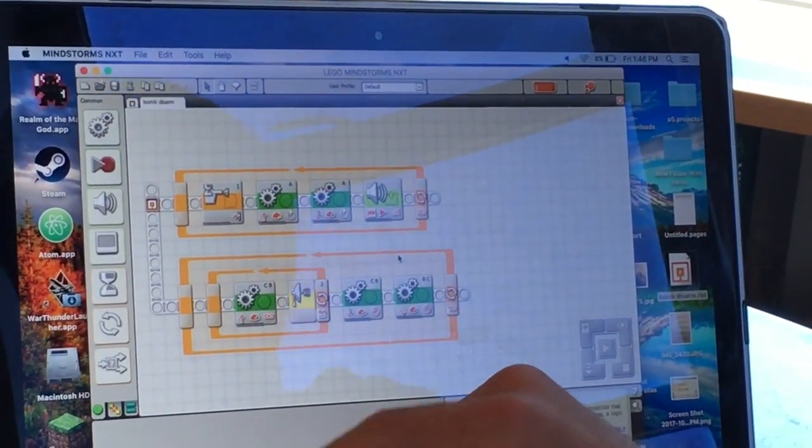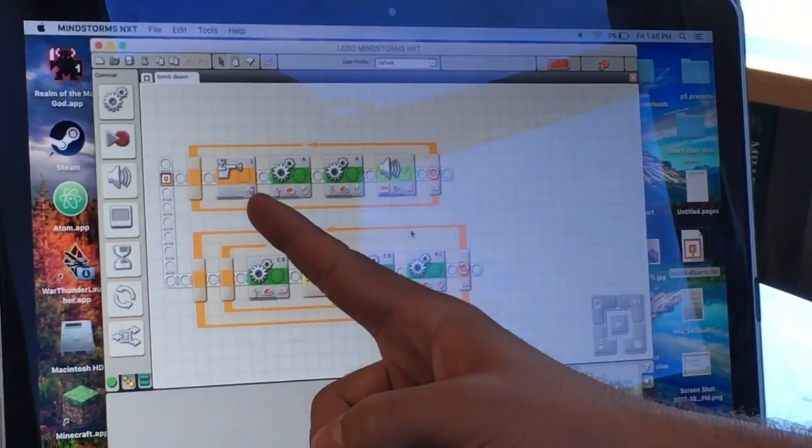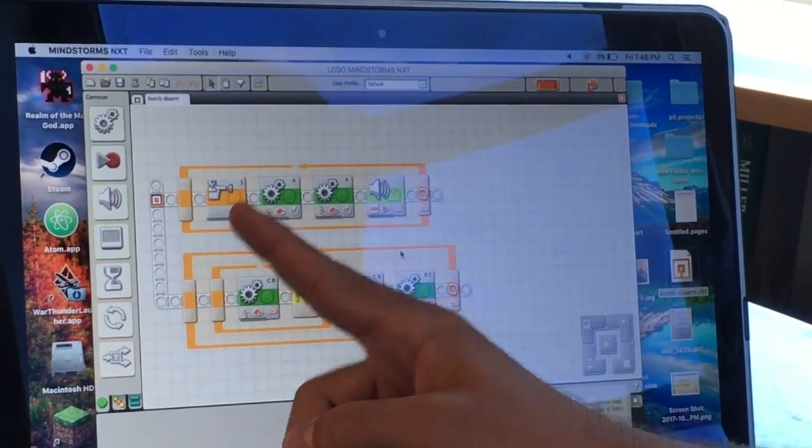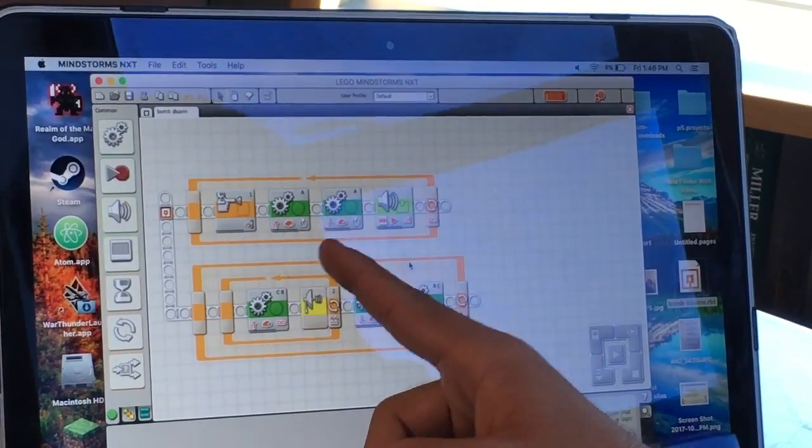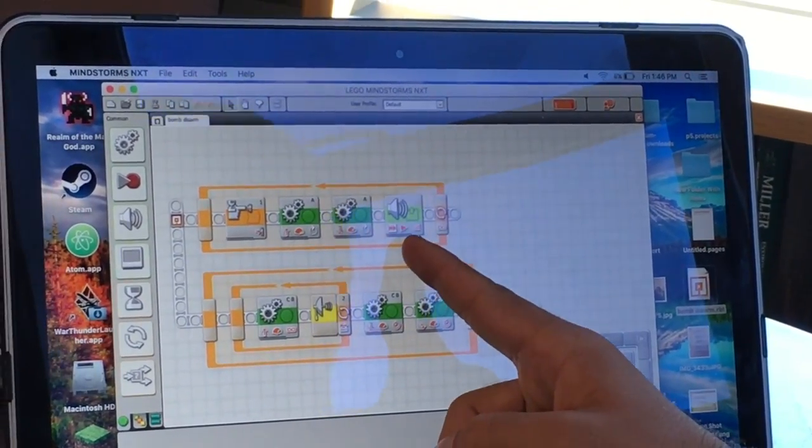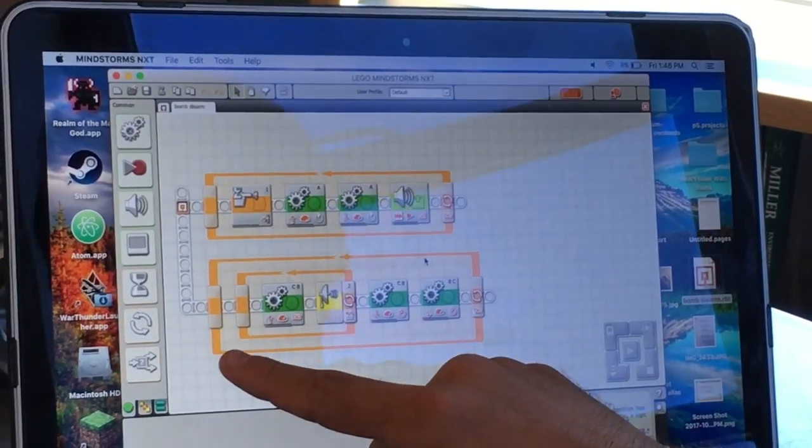One of the best parts about our robot is its unique coding. In the first loop, we have a push sensor that when it is pressed, it moves the arm forward 180 degrees, then back 180 degrees, and then makes a sound signaling that we have disarmed the bomb.